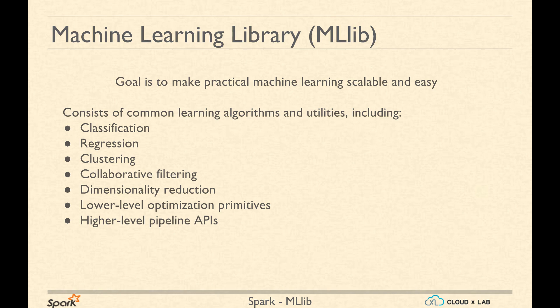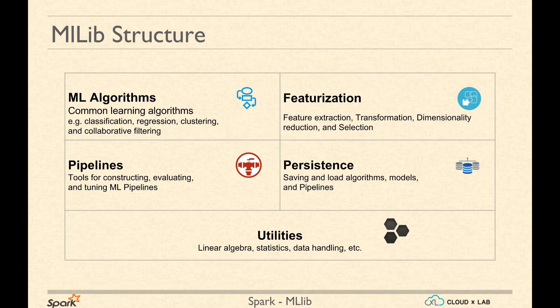It has the concept of pipelines to help you create machine learning workflows. The functionality of MLlib is roughly classified into five packages. The first one is ML algorithms, which has common machine learning algorithms such as classification, regression, clustering, and collaborative filtering. Featurization tools contain functions to help in feature extraction, transformation, dimensionality reduction, and selection.